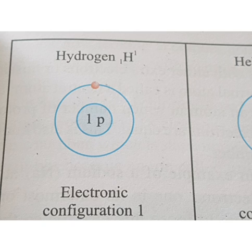For example, as you can see on the screen, there is an example of the hydrogen atom. Hydrogen has only one proton and no neutron. Hydrogen is the unique element — it is the only element which does not possess a neutron. All other atoms have both protons and neutrons, but hydrogen has only one proton. This is the unique property of hydrogen.